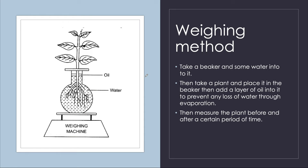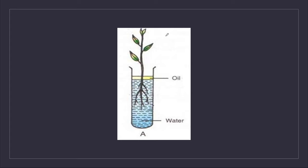With the weighing method, take a beaker, add some water, take a plant and place it in the beaker, then add a layer of oil to prevent any loss of water through evaporation. You would be familiar with this diagram from the absorption by roots chapter, where we used it to see that absorption happens through roots. We put oil to prevent evaporation.